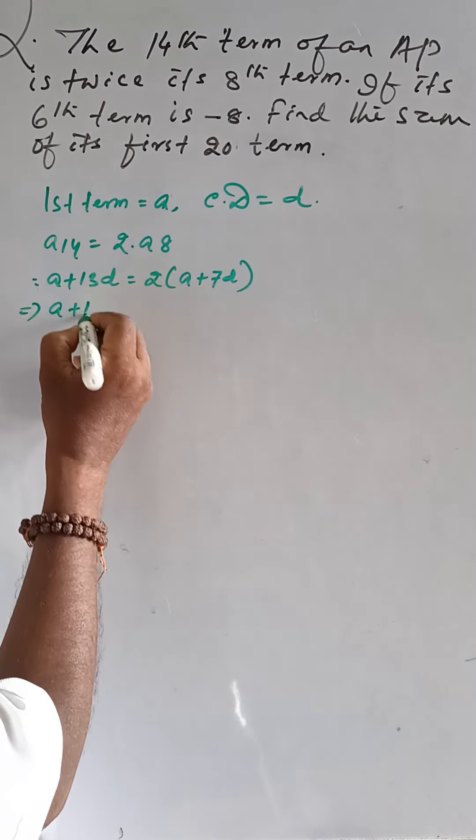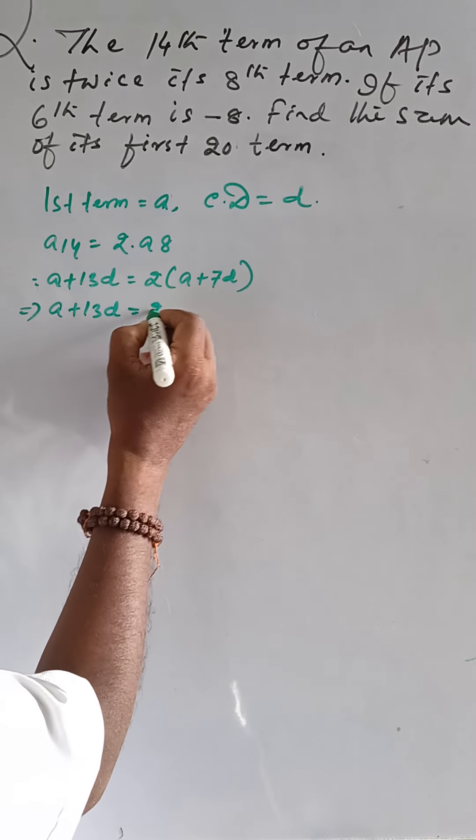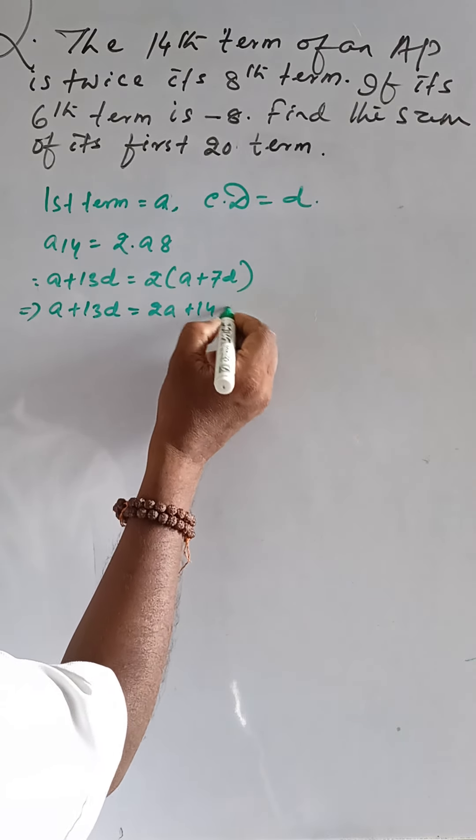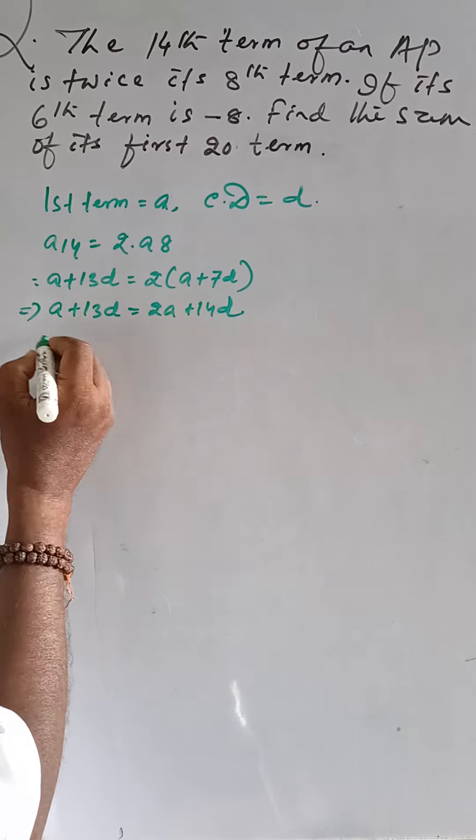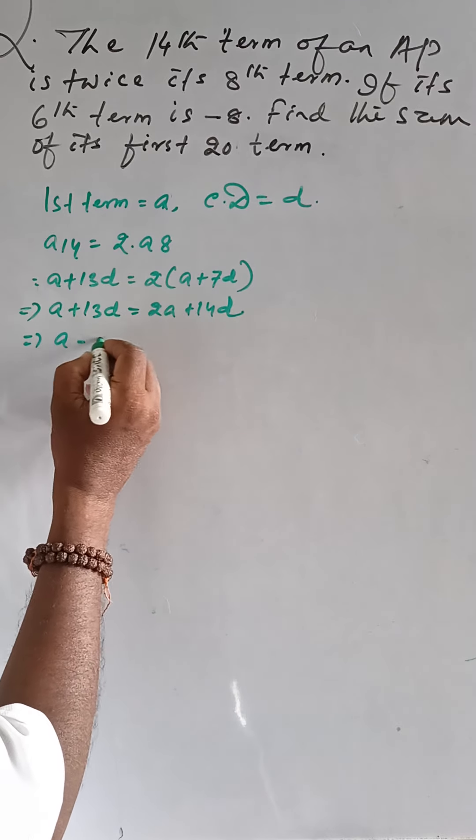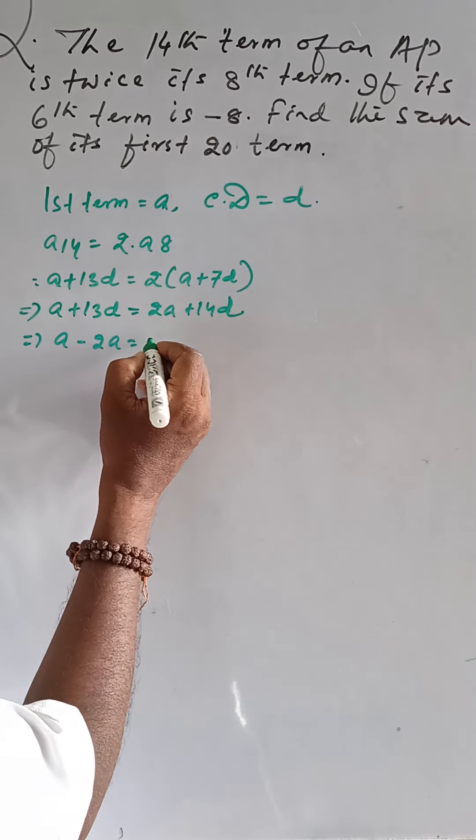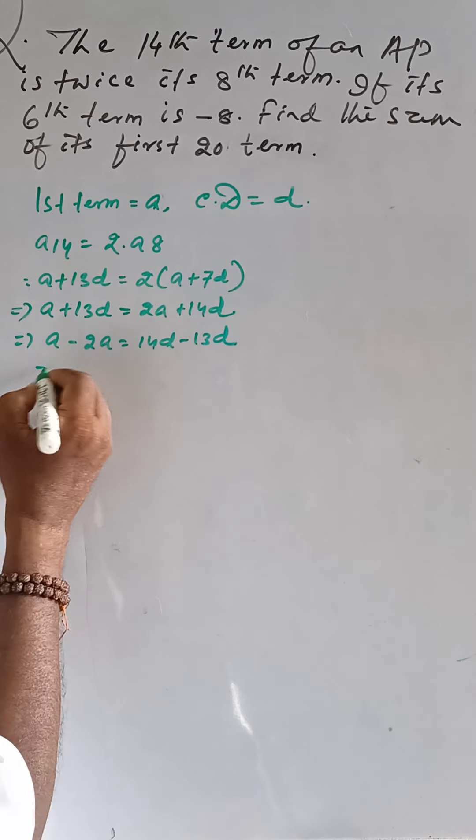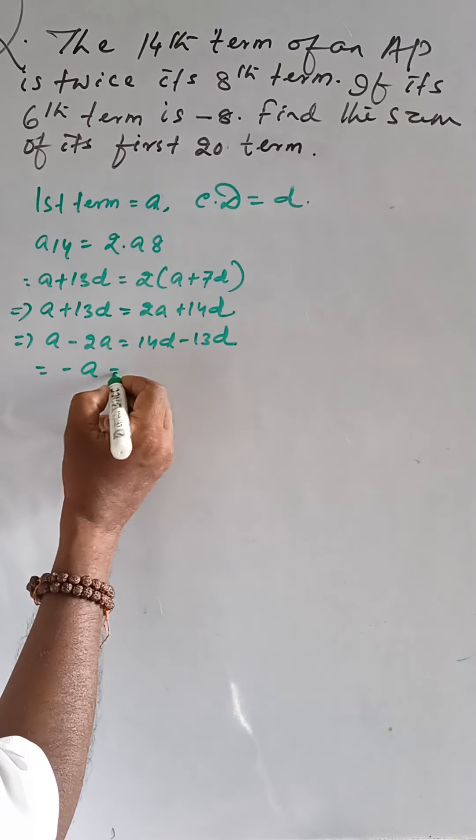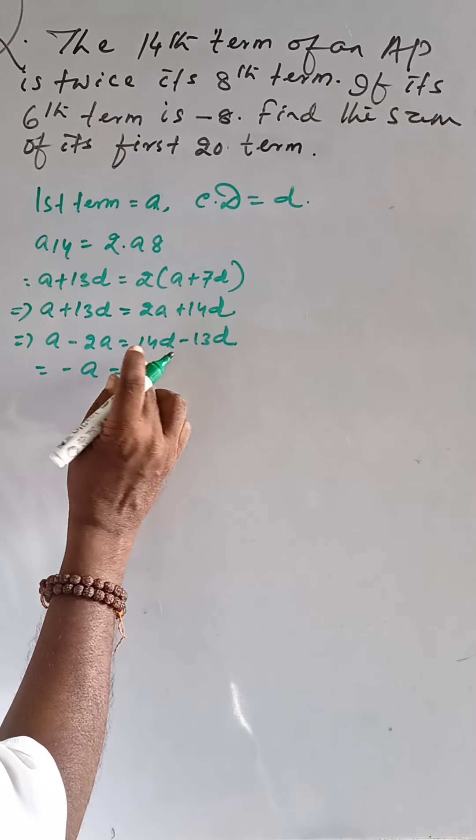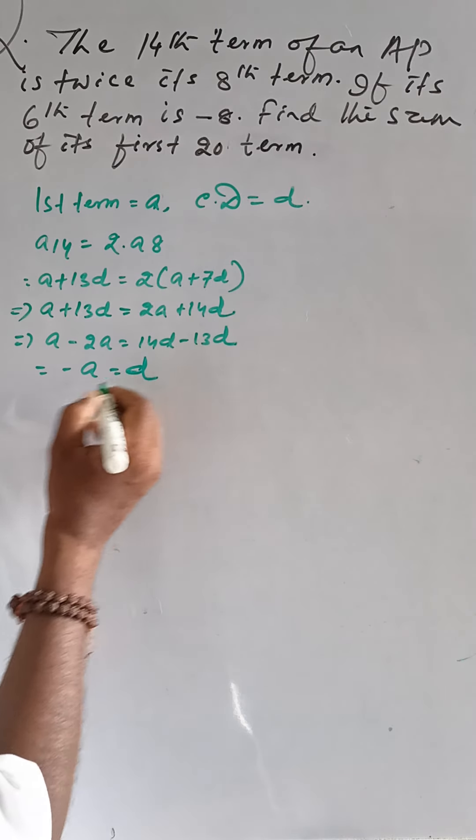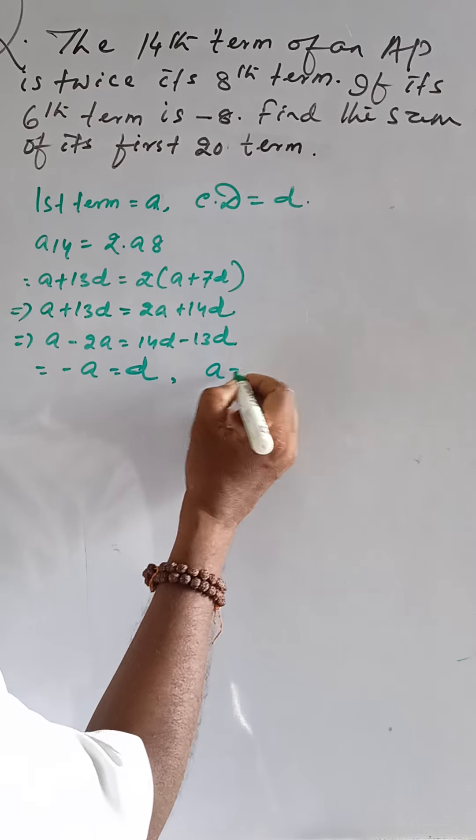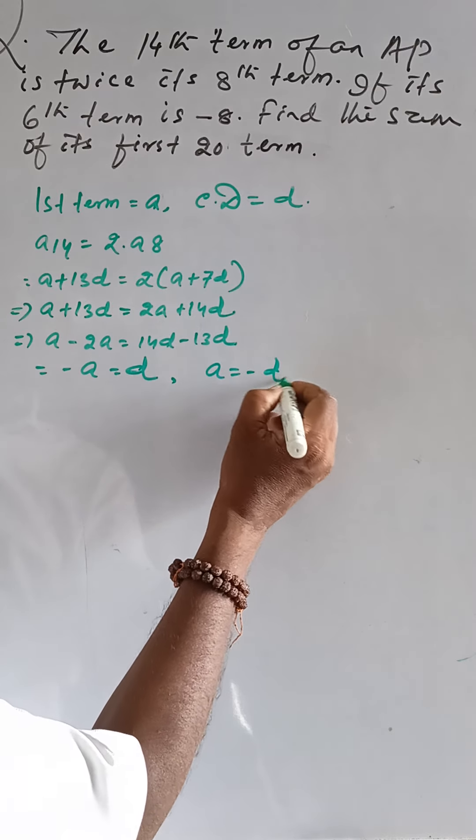Then A plus 13D is equal to 2A plus 14D. Then A minus 2A is equal to 14D minus 13D. That means minus A is equal to D. Finally, A is equal to minus D.